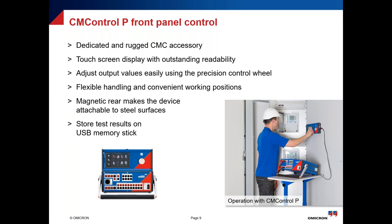This is the CM Control B hardware — it's a dedicated rigid CMC accessory, not the application. You connect it to the CMC using Power over Ethernet technology, so you only need a simple Ethernet cable. It is a 7-inch touchscreen that allows you to adjust output values — current and voltage. It is magnetic, so you can stick it on any protection panel or metal surface, making it easy to work with during testing.